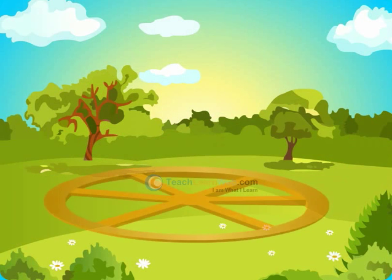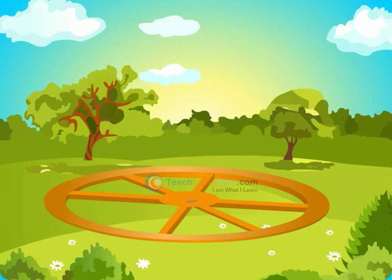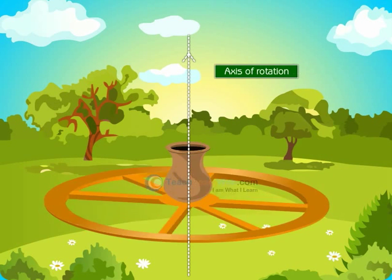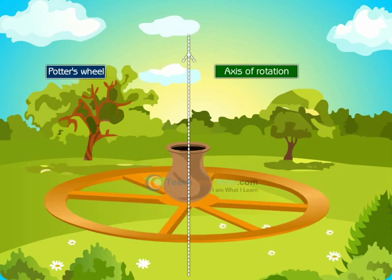If we consider body to just roll and doesn't have translatory motion, then the body just rotates along a fixed axis known as axis of rotation. Example, a potter's wheel.